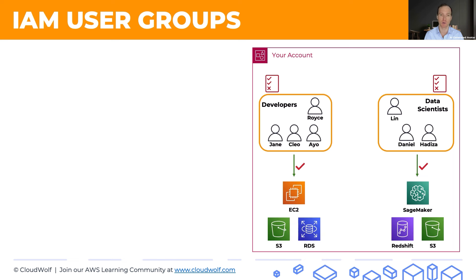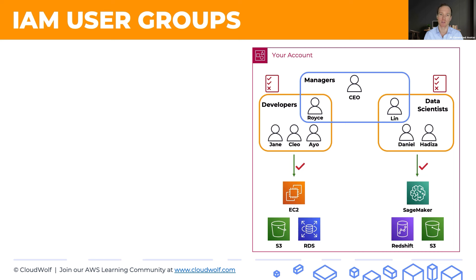Now, let's say we also have another user — the CEO. And together, Royce the CEO and Lynn are managers of the organization. They might need access to other tools such as IAM. Again, instead of assigning these permissions individually to each one of them, we can assign this permission to the whole group and they will inherit them.